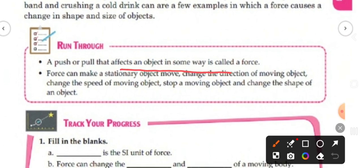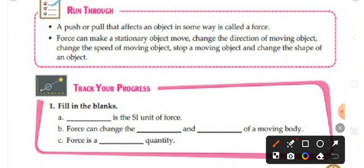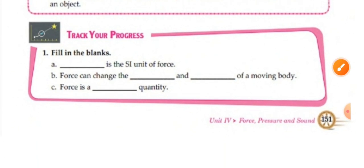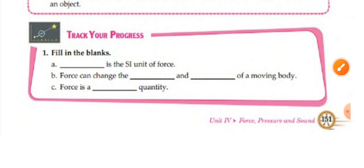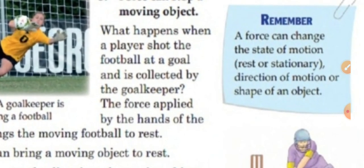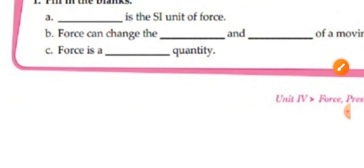To summarize, a push or pull that affects an object in some way is called a force. The important effects of force are: a stationary object can move, the direction of a moving object can change, the speed of a moving object can change, a moving object can be stopped, and the shape of an object can change. The SI unit of force is Newton. Force can change both the state of motion and the direction of motion of a moving body.